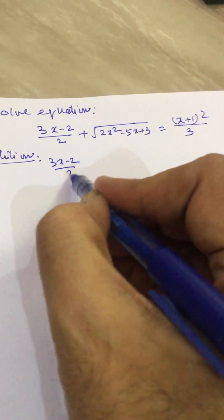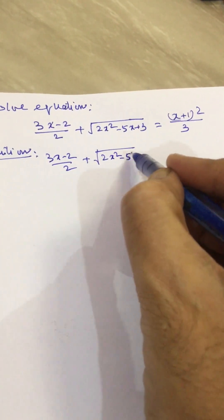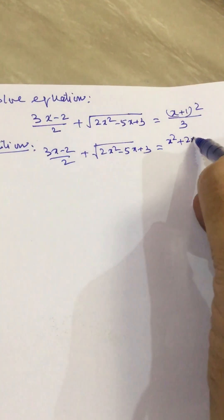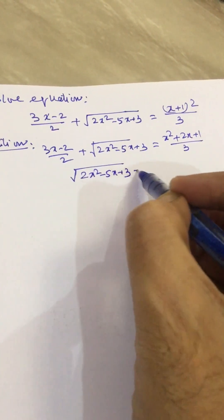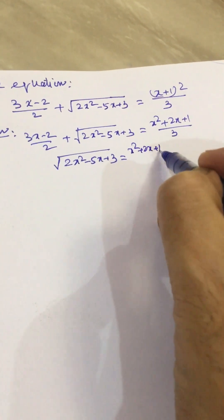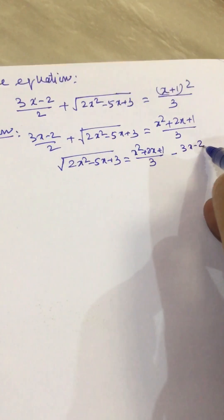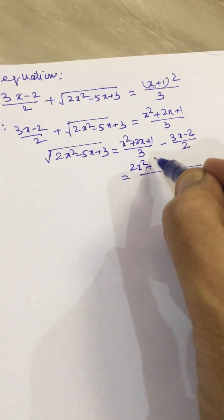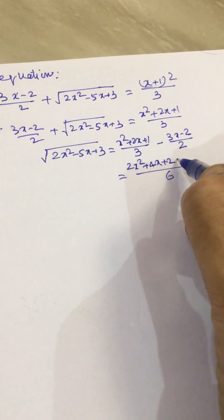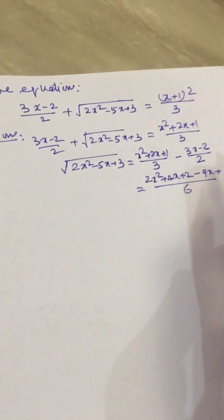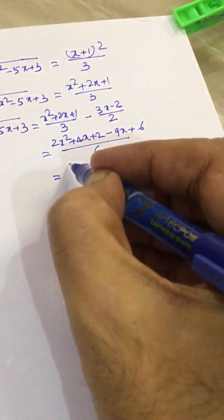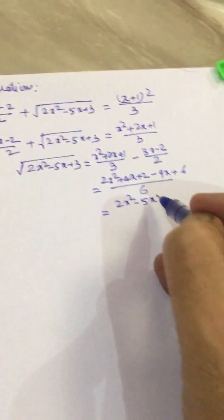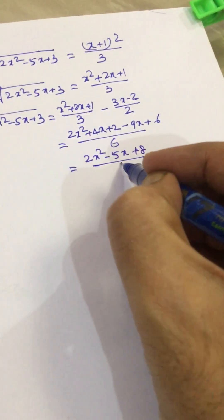We can write 3x minus 2 over 2 plus 3, which gives us x squared plus 2x plus 1 divided by 3, or x squared plus 1 over 3, minus 2 divided by 2. Taking LCM as 6, we get 2x squared plus 4x plus 2 minus 9x plus 6, which simplifies to minus 5x plus 8 over 6.